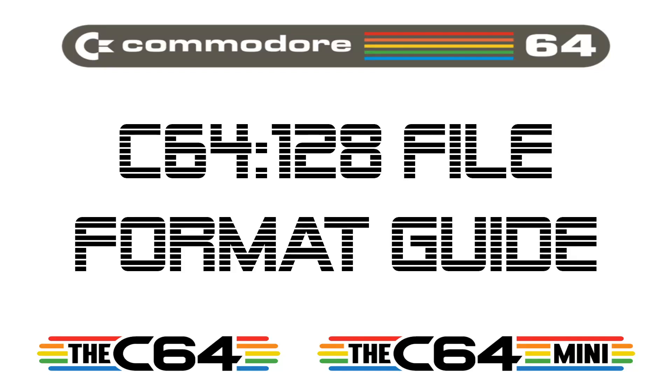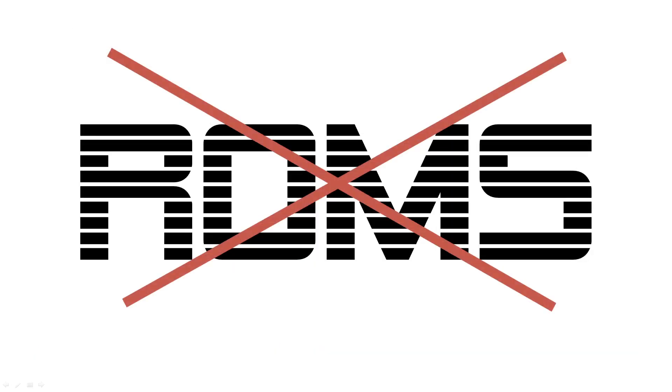Commodore 64 and 128 file format guide. The first mistake you can make is asking for ROMs. On other systems such as the NES, Master System, and Mega Drive, they only have cartridges and those cartridges only contain ROMs — hence they are ROM dumps. This is not the case on the C64, as it is a computer and ROMs have another meaning.